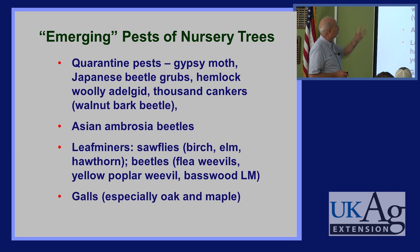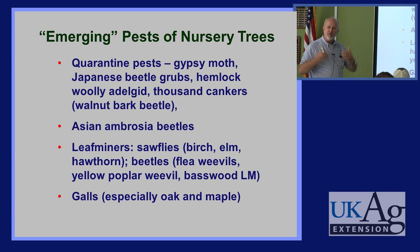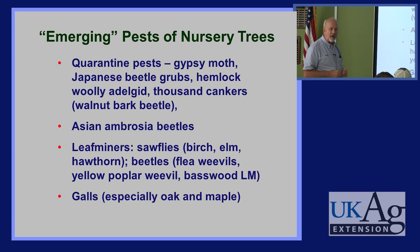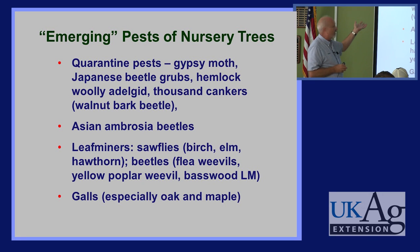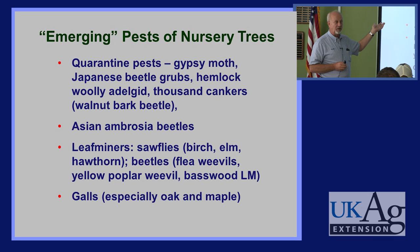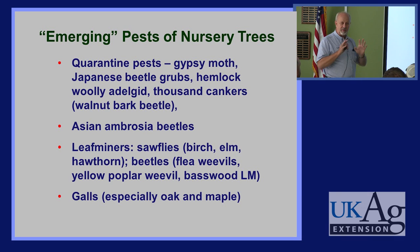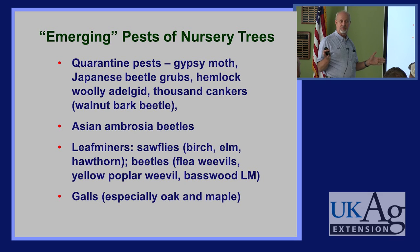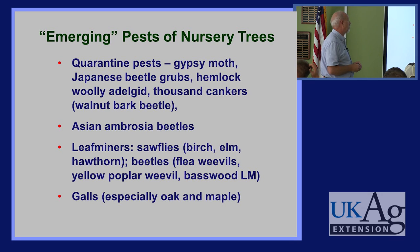Hemlock woolly adelgid is steadily moving across the state — we've discovered it in Ohio. But as a nursery pest, it's very simple to control. Typically one treatment, as I say, nuking of that will keep it out of your trees for two to three years. So it's an easily managed one.